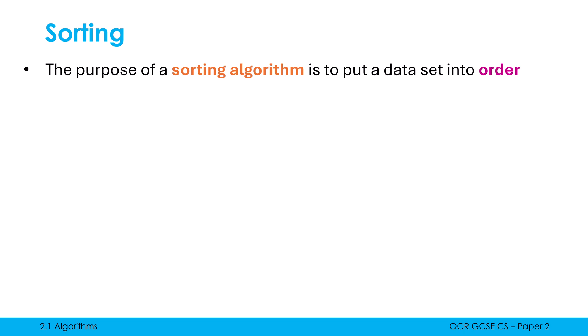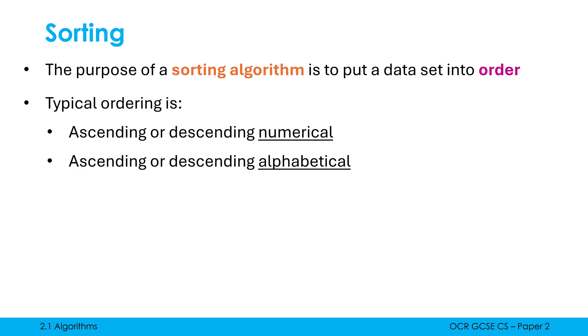Maybe it's obvious, maybe it's not obvious. The purpose of a sorting algorithm is to put a data set into order. And typically the ordering is either numerical or alphabetical, either ascending or descending. Ascending means smallest to biggest, descending is biggest to smallest.